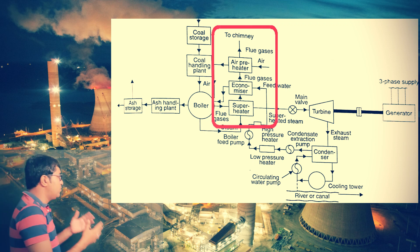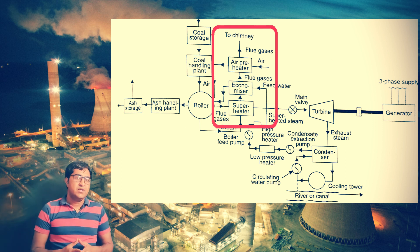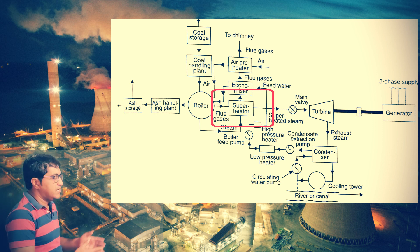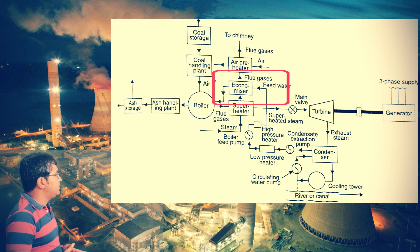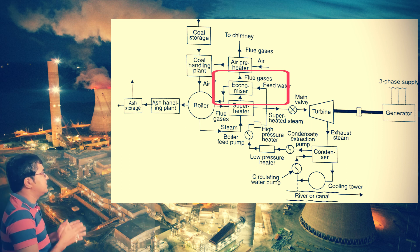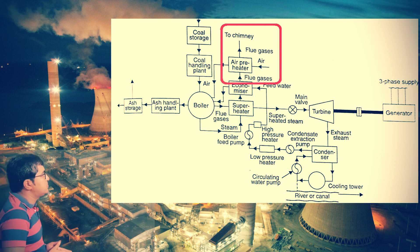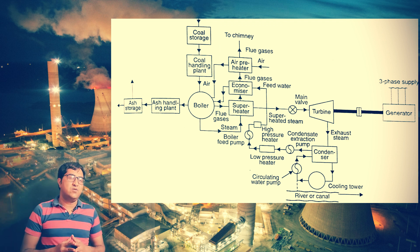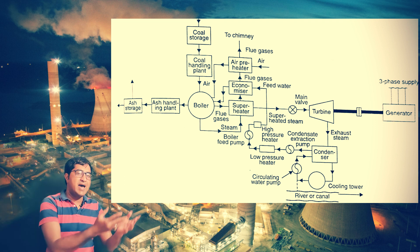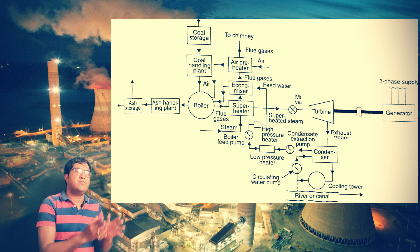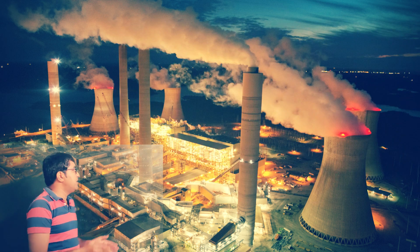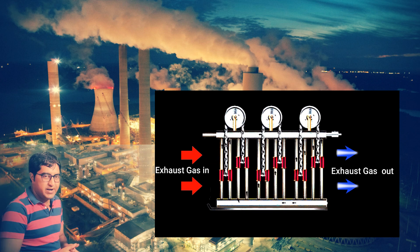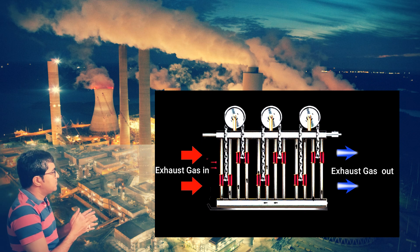The flue gases generated in the boiler pass through the superheater, where they transfer heat to generate superheated steam. Then the flue gases pass through the economizer, and finally through the air preheater before being exhausted to the atmosphere via the chimney. Since a small amount of energy is still available in the exhaust gases, exhausting them directly would be a wastage of thermal energy. Instead, they pass through heat exchangers — the economizer and air preheater — to recover that energy.